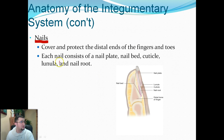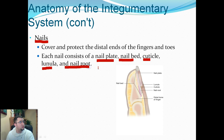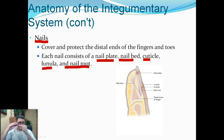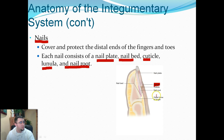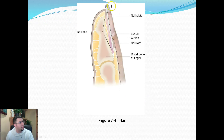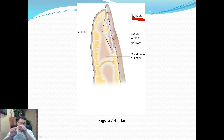The next thing we find in the integumentary system is nails, on your toes and the ends of your fingers. Each nail consists of a nail plate, a nail bed, a cuticle, a lunula, and a nail root. The nail plate is commonly what we refer to as the nail itself. The nail bed is what's underneath, where the nail lies. The lunula is the area where the nail is actually growing. The cuticle is that little flap of skin on top of the nail that helps give it protection. To review: the nail plate is what we call the nail, and the lunula is the area that grows and extends it, pushing old cells out.